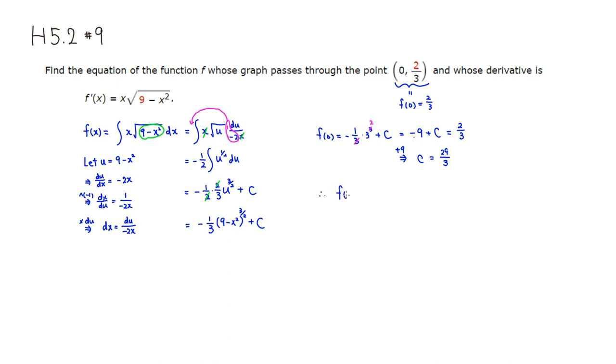which is equal to negative 1 third, quantity 9 minus x squared, raise it to the 3 halves power, plus 29 over 3.